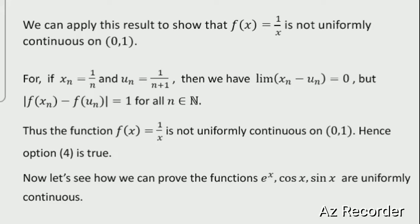Then we have the limit of x_n - u_n equal to 0, but |f(x_n) - f(u_n)| = 1 for all n in ℕ. Thus the function f(x) = 1/x is not uniformly continuous on the open interval (0,1). Hence option 4 is correct — the function f(x) = 1/x is not uniformly continuous. The question asks which function is not uniformly continuous on (0,1).